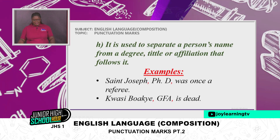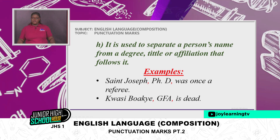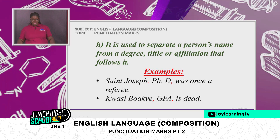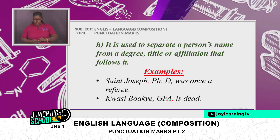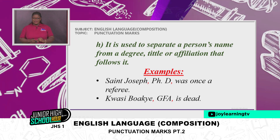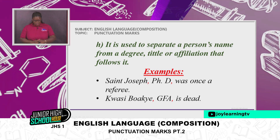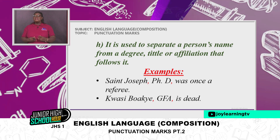Still on comma — it is used to separate a person's name from a degree, title, or affiliation that follows it. Examples: 'St. Joseph, PhD, was once a referee.' 'Kuesi Boache, GFA, is dead.' You can see the commas separating the name from the title.